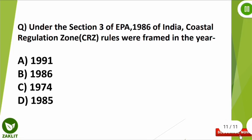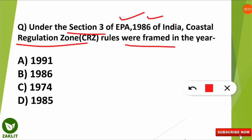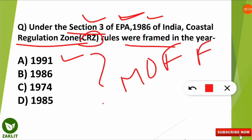The next question is: under Section 3 of the Environmental Protection Act of 1986 of India, Coastal Regulation Zones were framed in which year? The correct option is A — in the year 1991, CRZ rules were framed for the regulation of activities in coastal areas. This was done by the Ministry of Environment and Forest, now known as the Ministry of Environment, Forest and Climate Change.